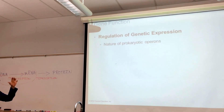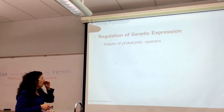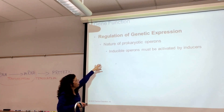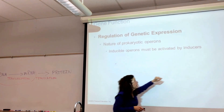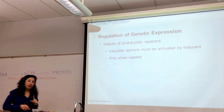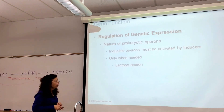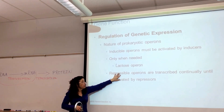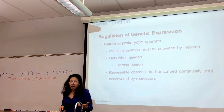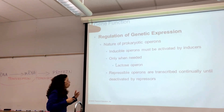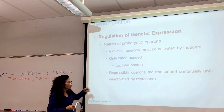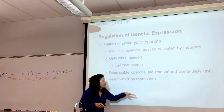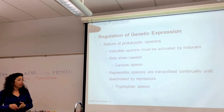Regulation of genetic expression in bacterial cells uses operons. There are different types. Inducible operons are activated by inducers, but only when they are needed — the classic example is the lactose operon. Another type is the repressible operon, which is constantly being produced and transcribed and translated all the time, but can be deactivated by repressors. One example of a repressible operon is the tryptophan operon.